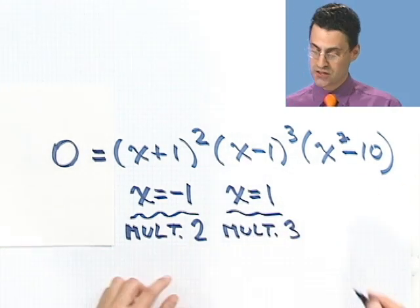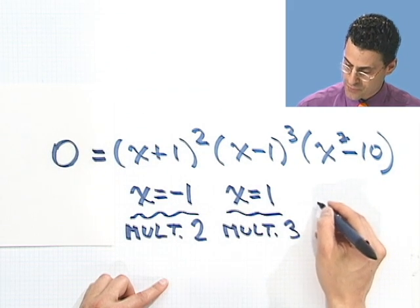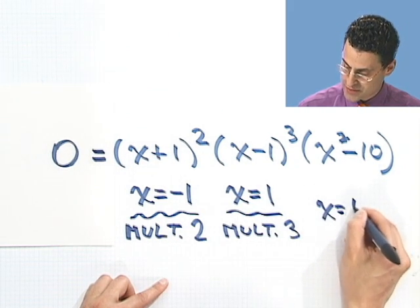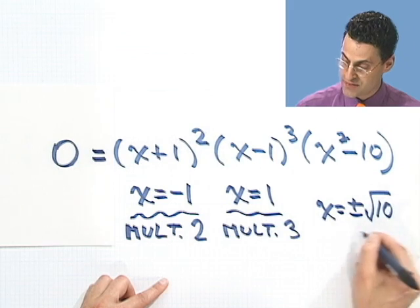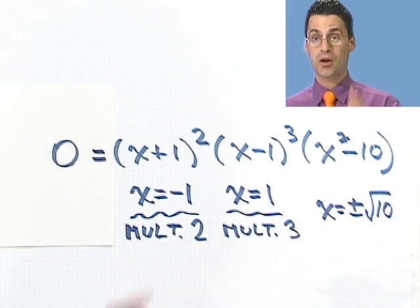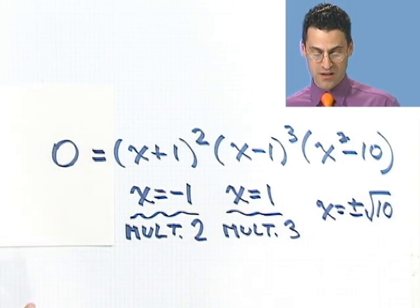And what's the solution here? The solution here is going to be x equals plus or minus the square root of 10. So these both occur with multiplicity 1, because they only appear once. All right, try some of these on your own and see if you can start to find the zeros and multiplicities.